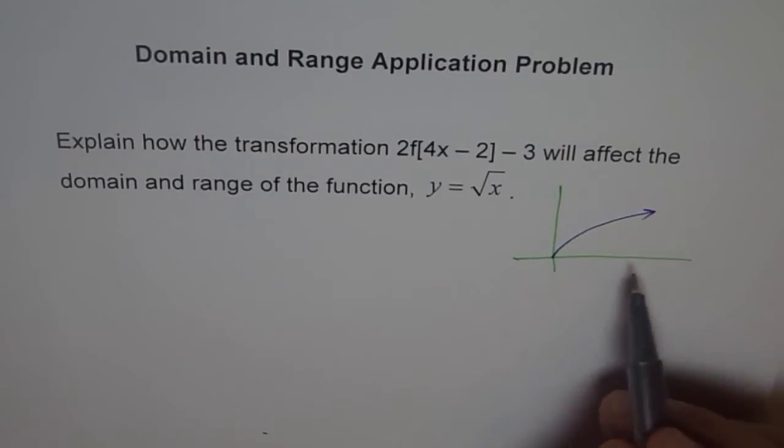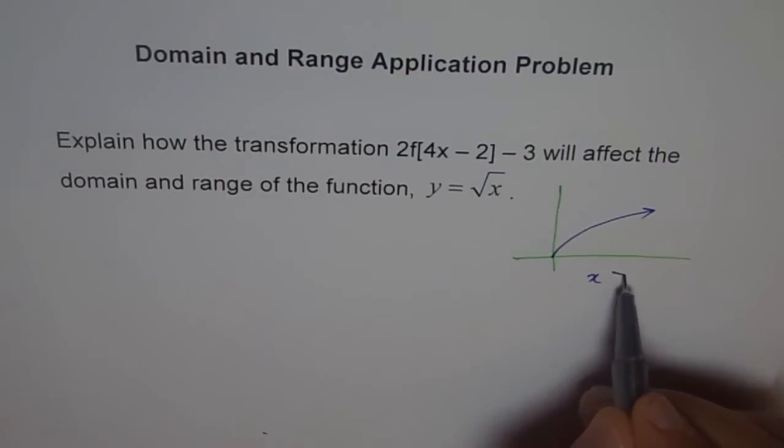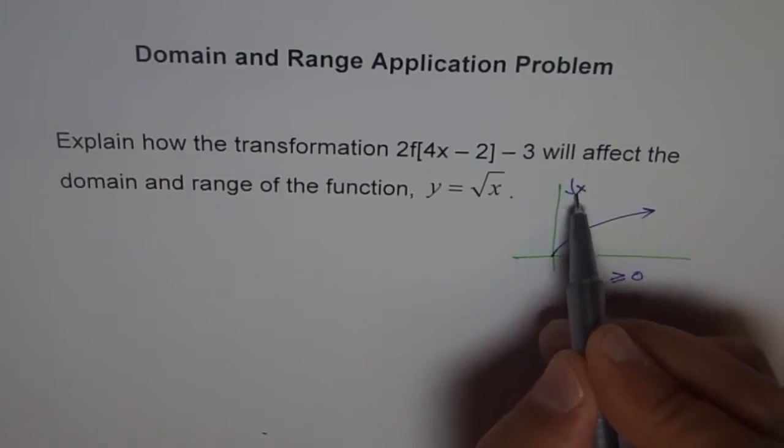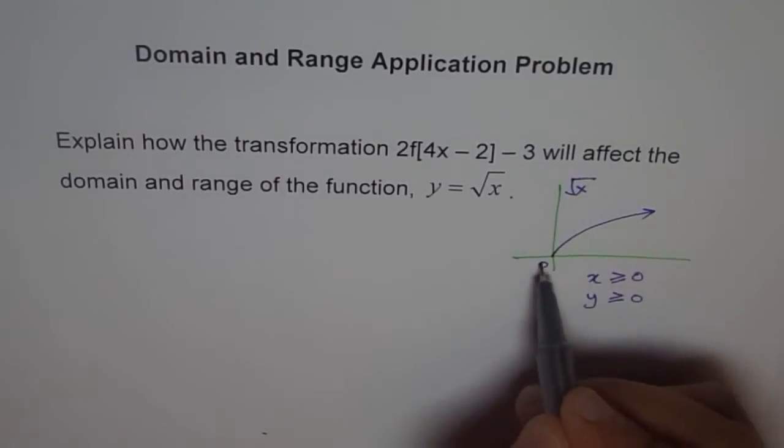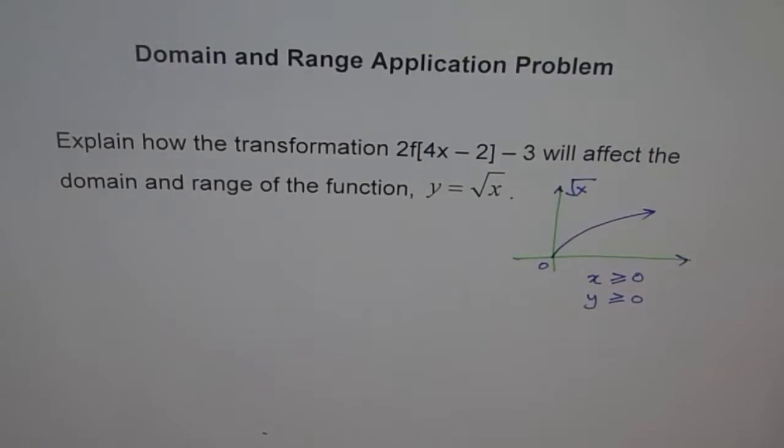So we see that the domain and range for this function is that x is greater than or equal to 0 and y is also greater than or equal to 0. So that's the domain and range of our function which is square root x. It's a rough sketch to really see and understand the problem.